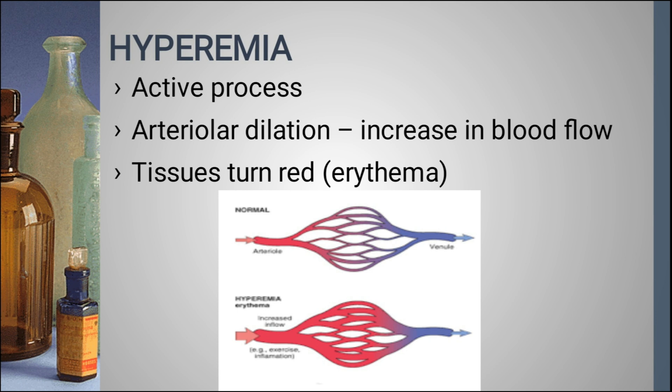The redness is because of increased supply of oxygenated blood to the tissues. A capillary is a small blood vessel that conveys blood from the arterioles to the venules, so a capillary has an arterial end and a venous end. In this picture, we can see that in the hyperemia condition, the capillary is more of a red color due to increased oxygenated blood supply from dilation of the arterioles. Therefore, hyperemia is an active process.